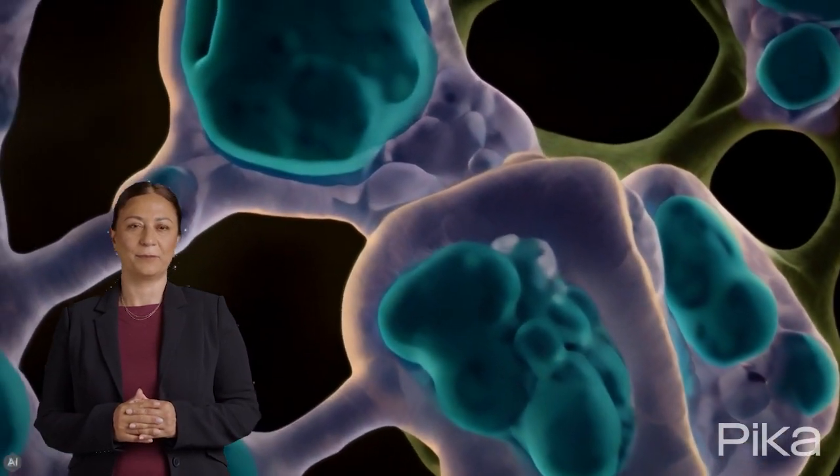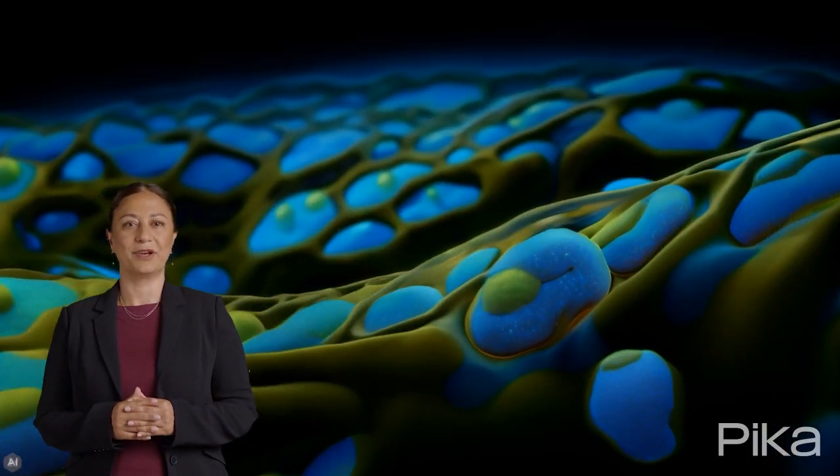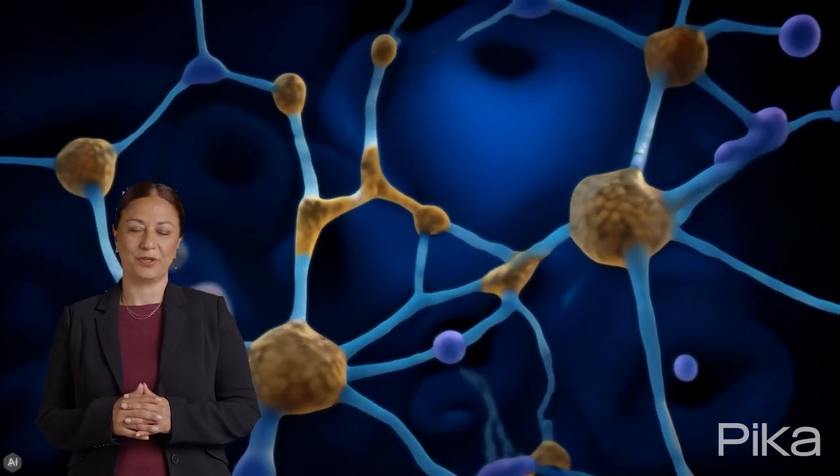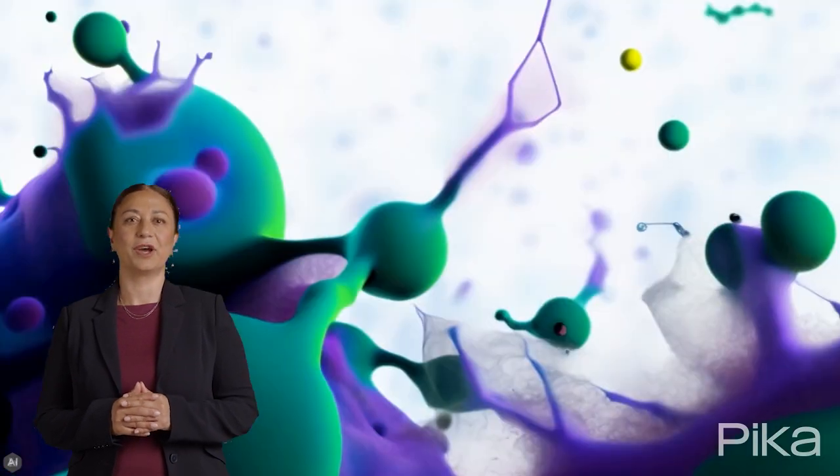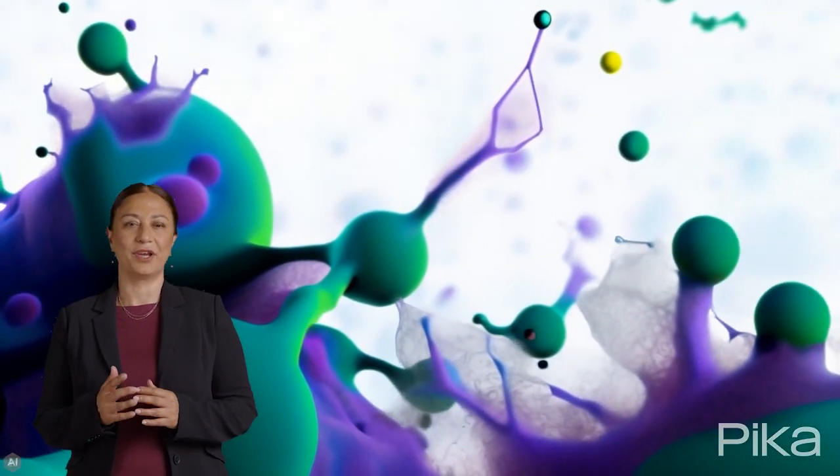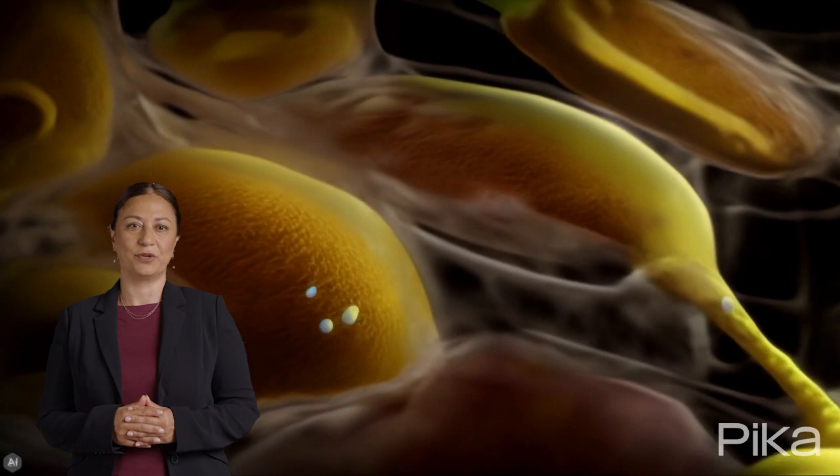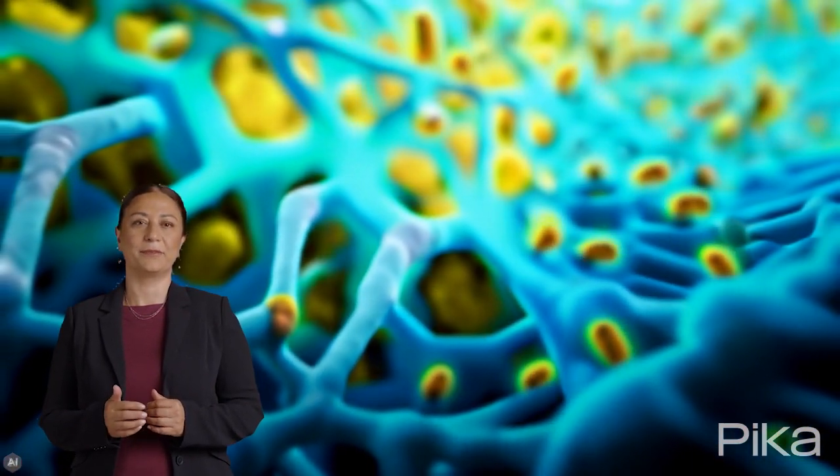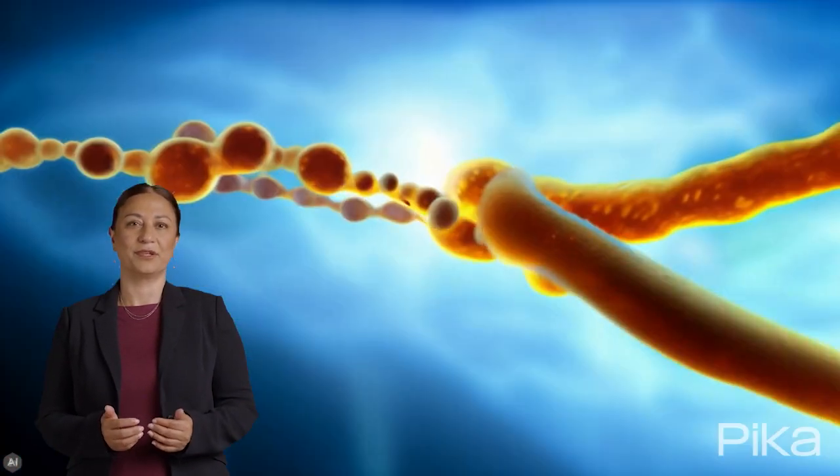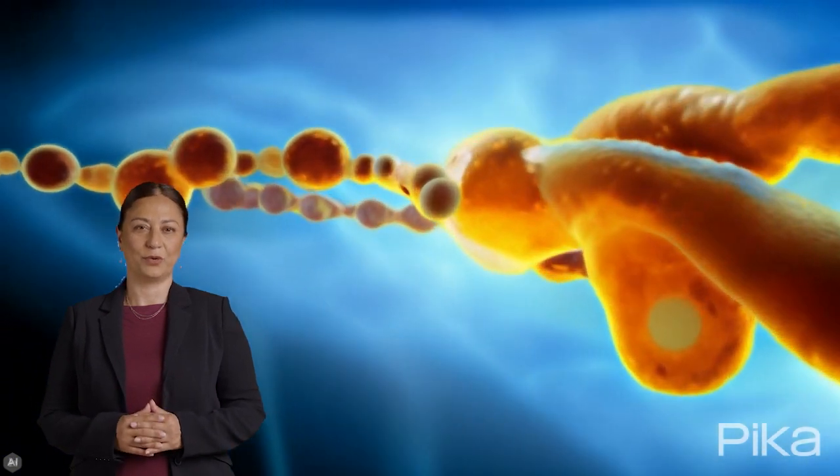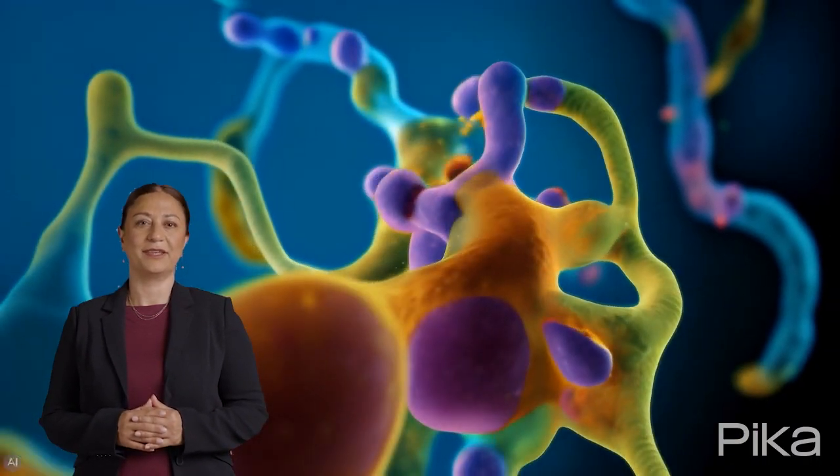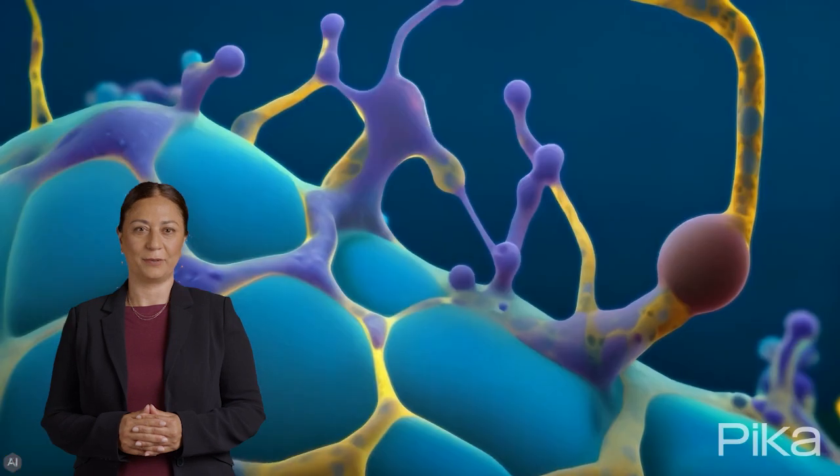Beyond the nucleus and ribosomes, the cell is home to various other organelles, each with a distinct role. The mitochondria, often referred to as the powerhouses of the cell, are where ATP, the energy currency of the cell, is produced through a process known as cellular respiration. This intricate process involves the breakdown of glucose and other nutrients, releasing energy that is then captured and stored in ATP molecules.